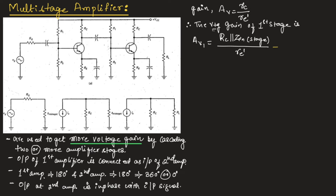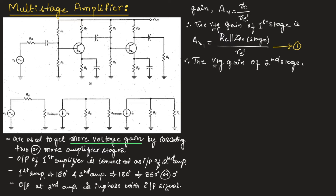Let us call this equation number 1. Similarly, the voltage gain of the second amplifier is also given as Av = rc / Re'. Here, rc at the output side of the second amplifier is capital Rc parallel with capital RL. Therefore, the voltage gain of the second stage, av2, is given as (Rc ∥ RL) / re'. Let us call this equation number 2.